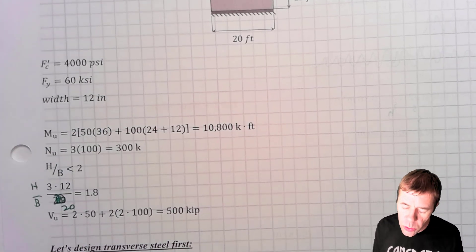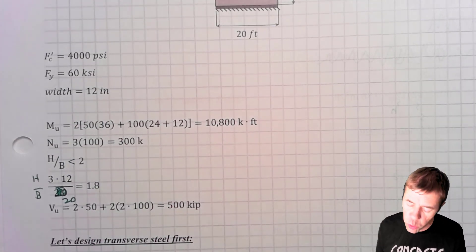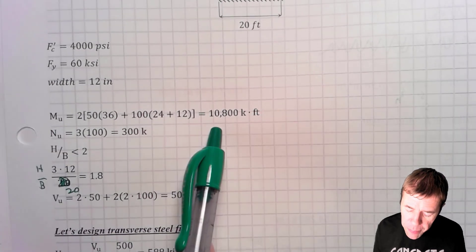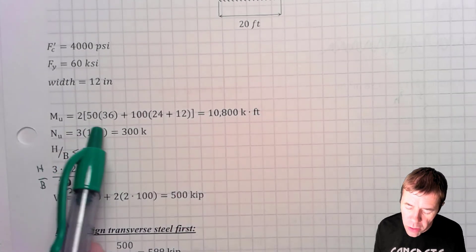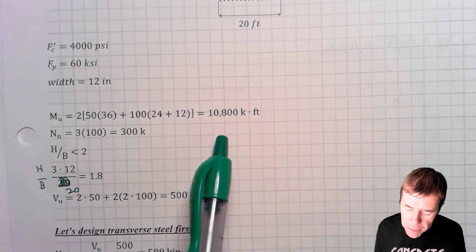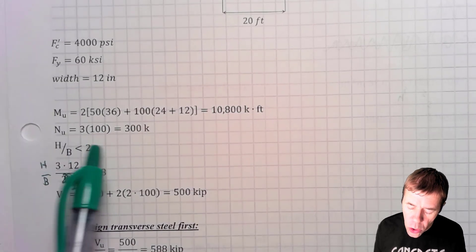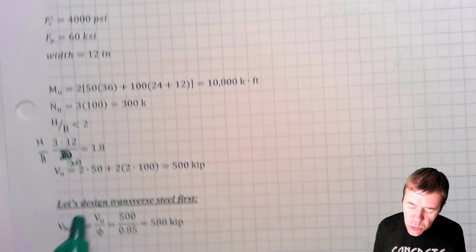So we're going to do some structural analysis first. This is pretty straightforward stuff. We solve for what the moment is at the base. We take each one of the loads and multiply by their moment arm. We find the axial load at the base as well. We also find the shear.